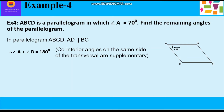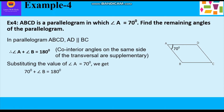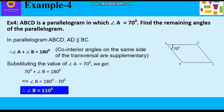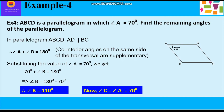That means angle A plus angle B is equal to 180 degrees. Substituting the value of angle A equal to 70 degrees, we get 70 degrees plus angle B equals 180 degrees. So angle B is equal to 180 minus 70, which comes to 110 degrees. We have calculated angle B using the co-interior angle property, and that is 110 degrees.